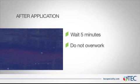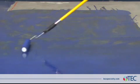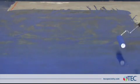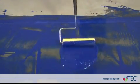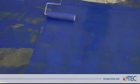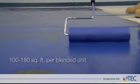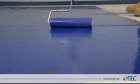Do not overwork. Higher temperatures will shorten the work time. After five minutes, begin to backroll the surface with a three-sixteenth-inch nap foam roller to evenly distribute the product. First, saturate the roller and then work at a slow, even pace. Periodically evaluate the surface to ensure a smooth, continuous film. The Liquid Dam covers between 100 and 180 square feet per blended unit.